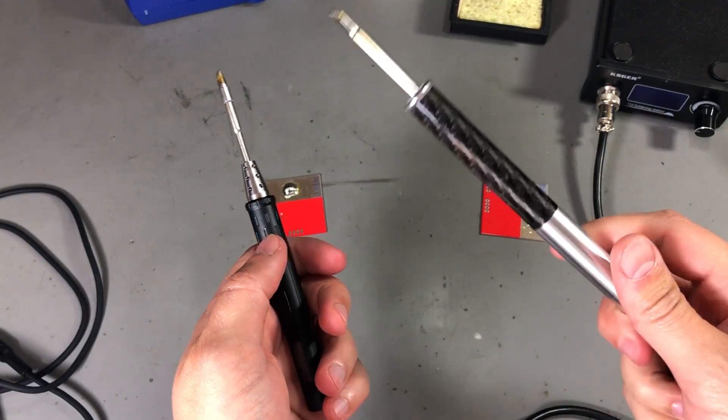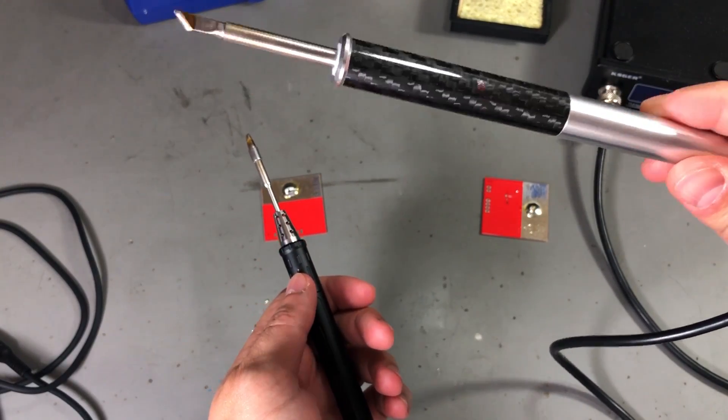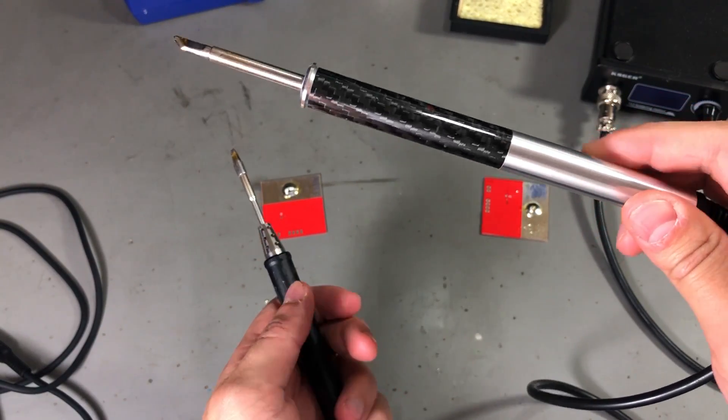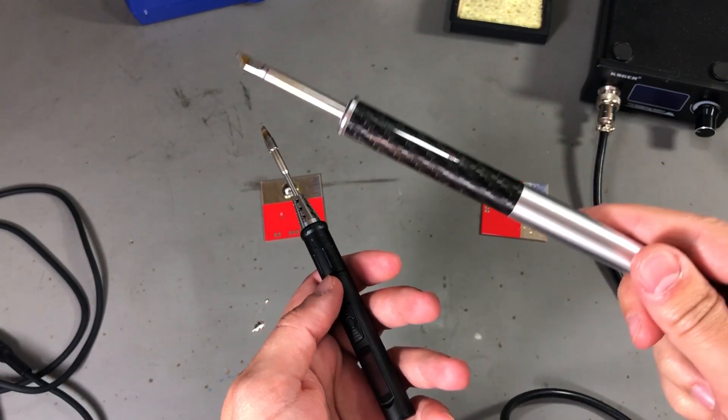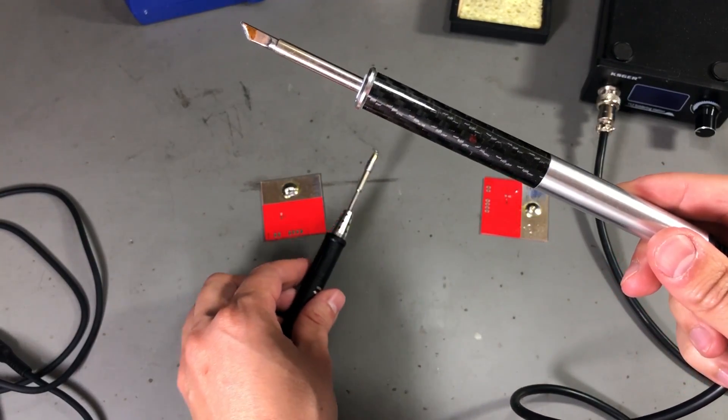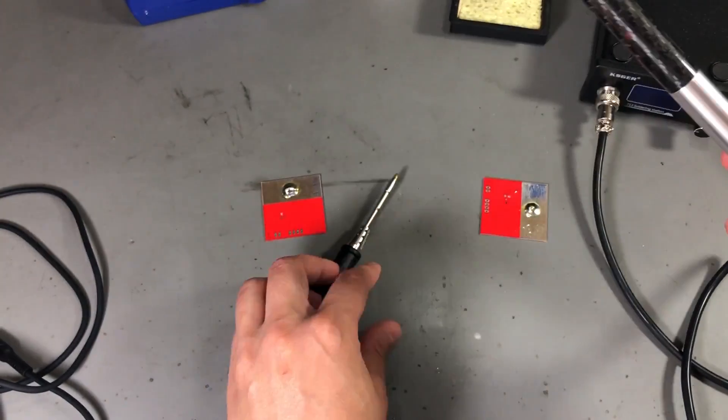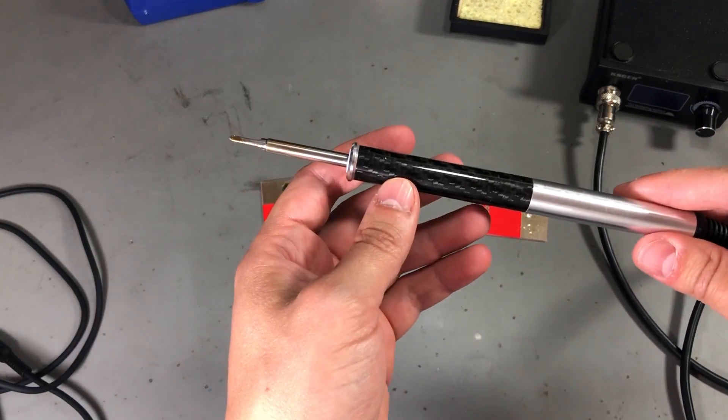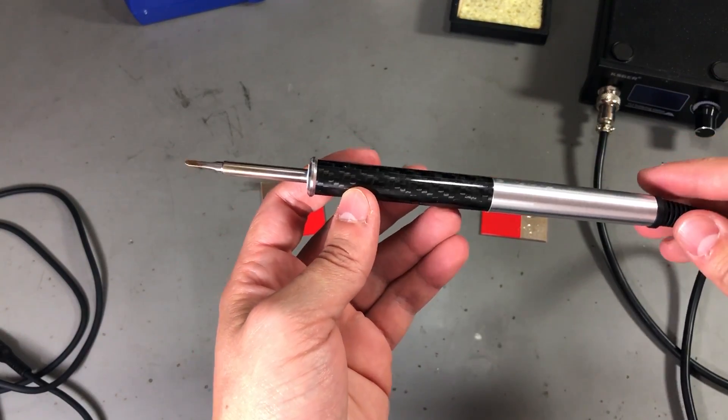And once again, the Kaysger T12 wins. It was about 11 seconds faster, and it was to be expected—it is rated for a much higher power than the TS80 is. So I'm expecting some comments to say this wasn't a fair comparison.